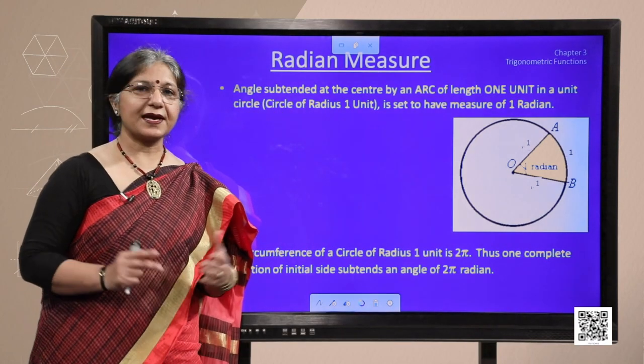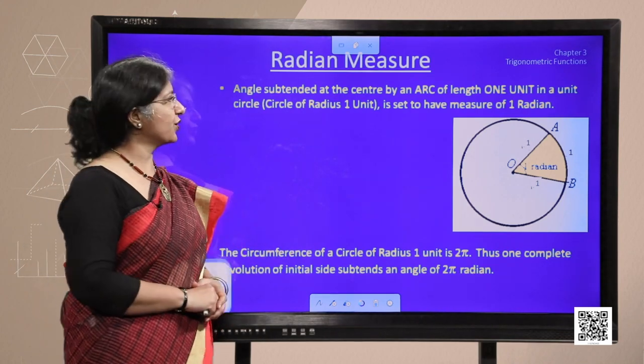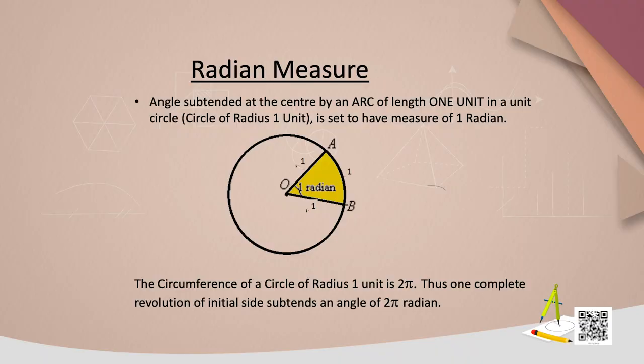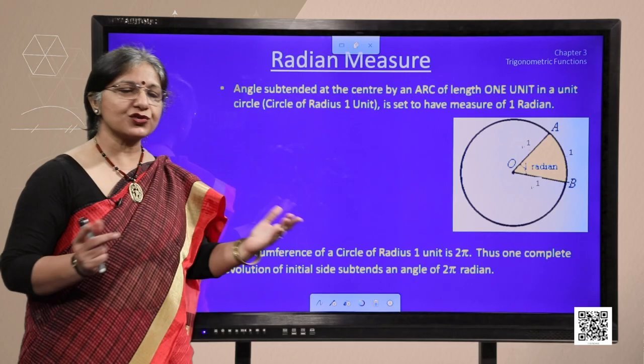Now comes radian measure, that is quite new for you. The angle subtended at the centre by an arc of length 1 unit in a unit circle. Now what is unit circle? A simply circle with a radius 1 is said to have measure of 1 radian.